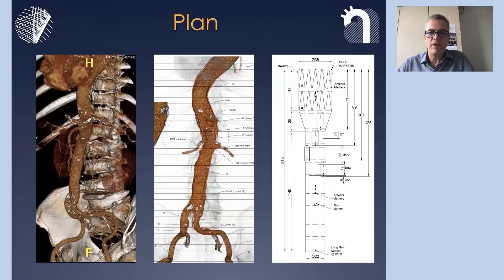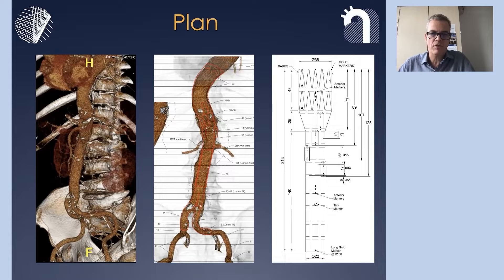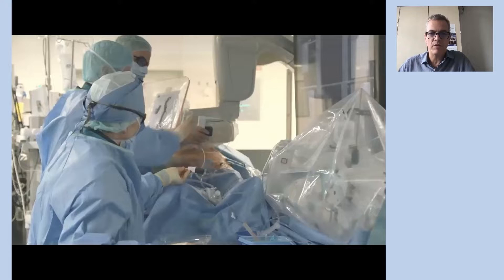The plan of the procedure is to use a four-branched short thoracoabdominal endograft in order to connect the four major thoracoabdominal vessels and include an aorto-biiliac component. So a pretty standard branched endovascular repair in a patient with some tortuous anatomy.